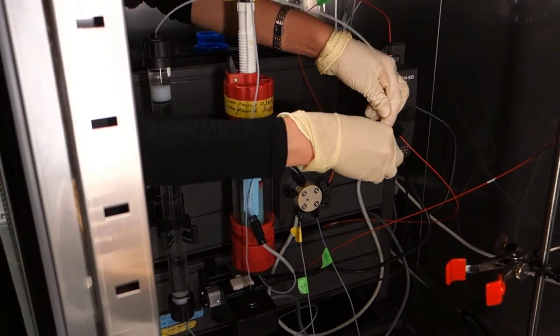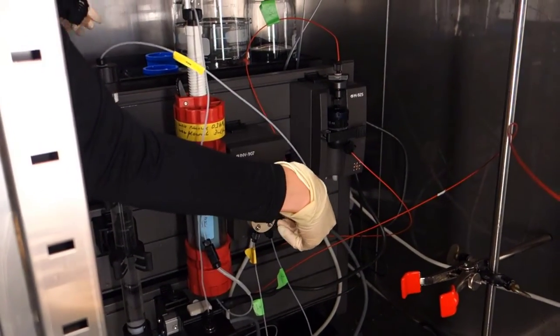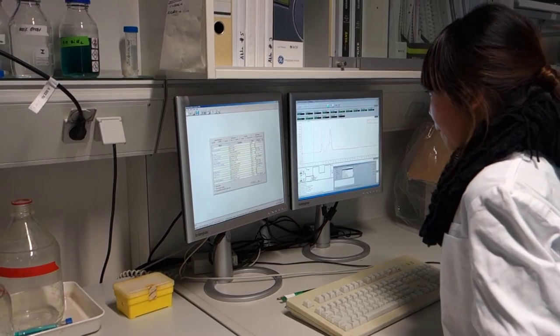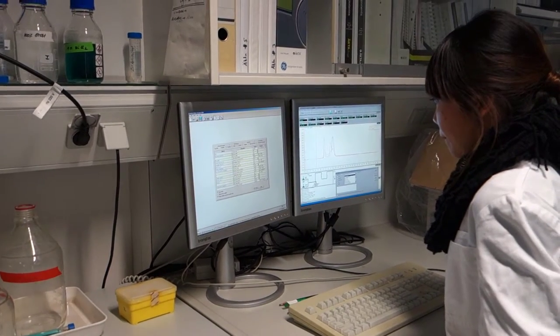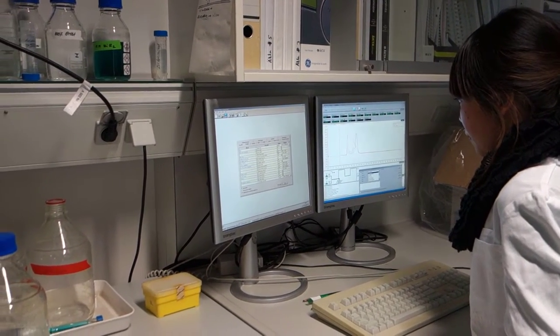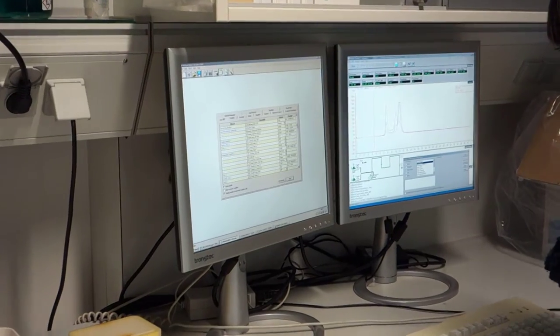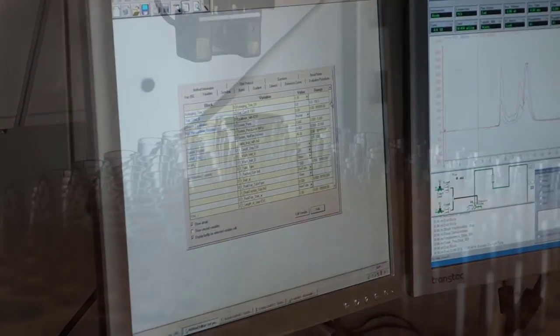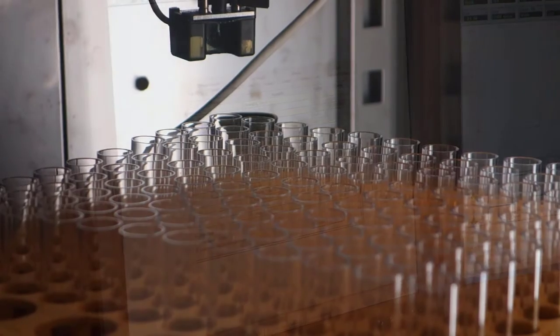Our protein has an N-terminal His tag so we use nickel column for the purification. We use this column because when the cell lysate passes over, the histidine tag binds to the nickel in the column, while the untagged components of the cell lysate pass unimpeded.